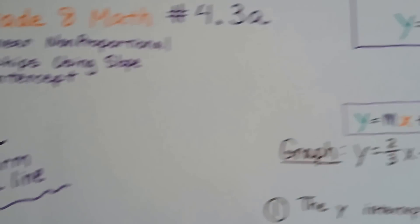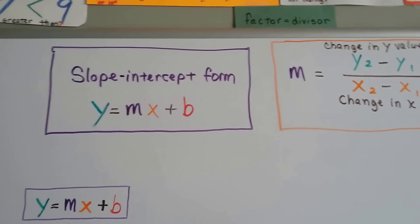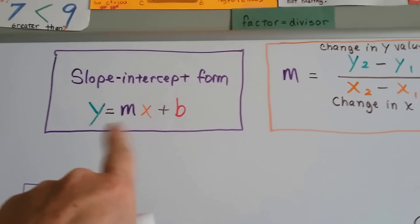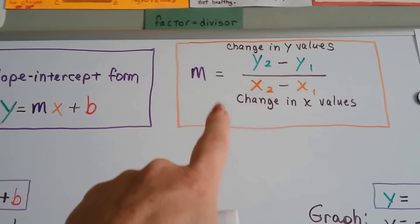Now you remember the slope-intercept form, right? We've talked about this in the last couple of videos. It's this equation, this formula. And don't forget that this is the slope formula.